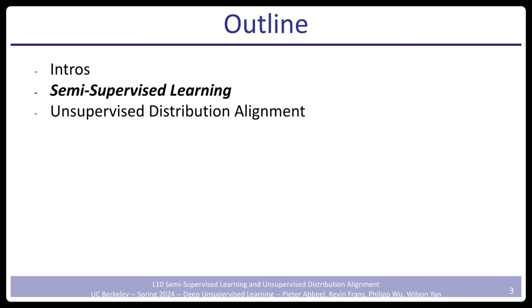I want to cover two topics today: semi-supervised learning and unsupervised distribution alignment. It's an interesting set of topics — intellectually there is a lot of richness in them and I find them pretty exciting. At the same time, they have not been the most active topics of research recently. The field has shifted to very large scale pre-training on massive datasets as opposed to looking specifically at these ideas. It could be a thing of the past, or maybe it's the right time for a comeback in certain settings.